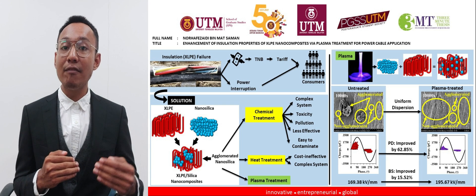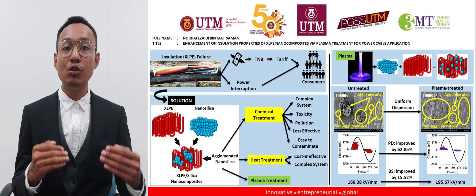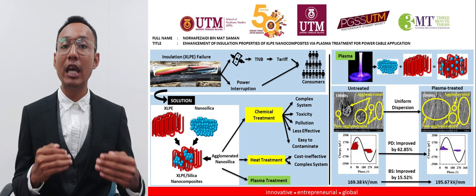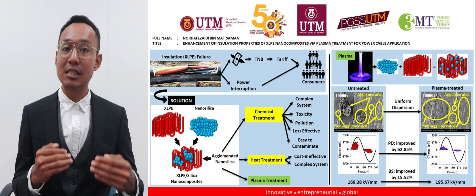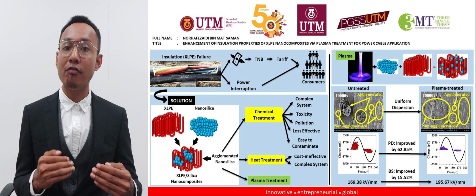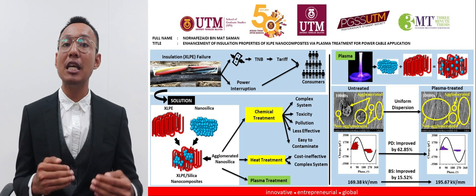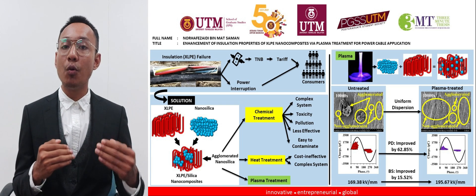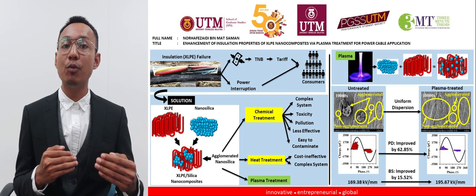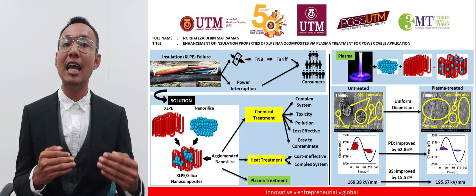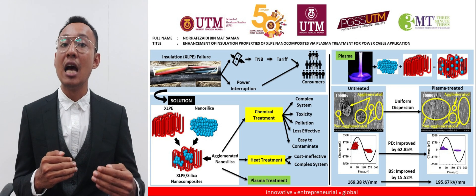Currently, the type of insulation used for power cables in Malaysia is made of polymer-based material, which is cross-linked polyethylene, or XLPE.